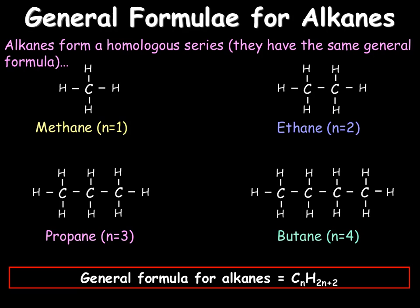Pause the video and work out the number of hydrogens for octane. Octane is an alkane that contains 8 carbons. Using our general formula CnH2n+2, with 8 carbons we have C8, then 2 times 8 is 16, plus 2 gives us 18. So our formula for octane would be C8H18.